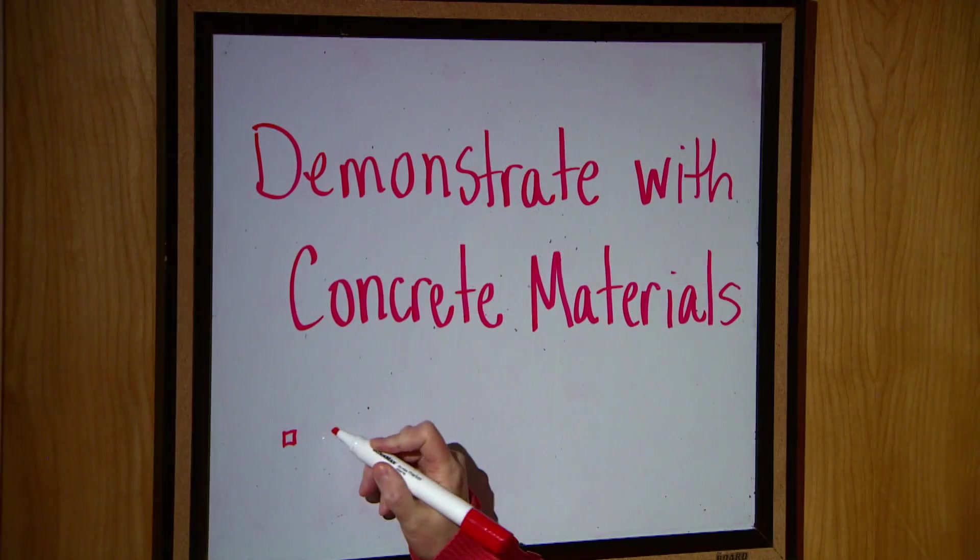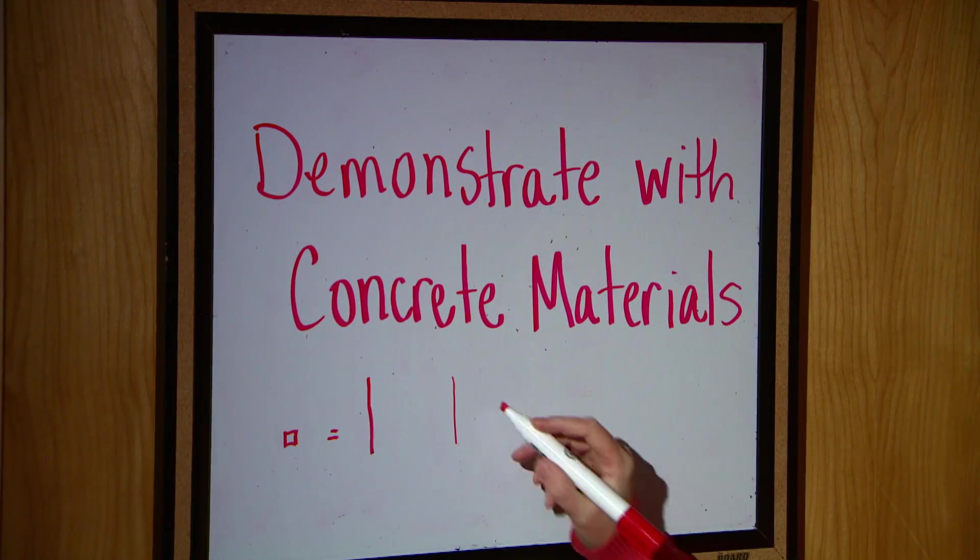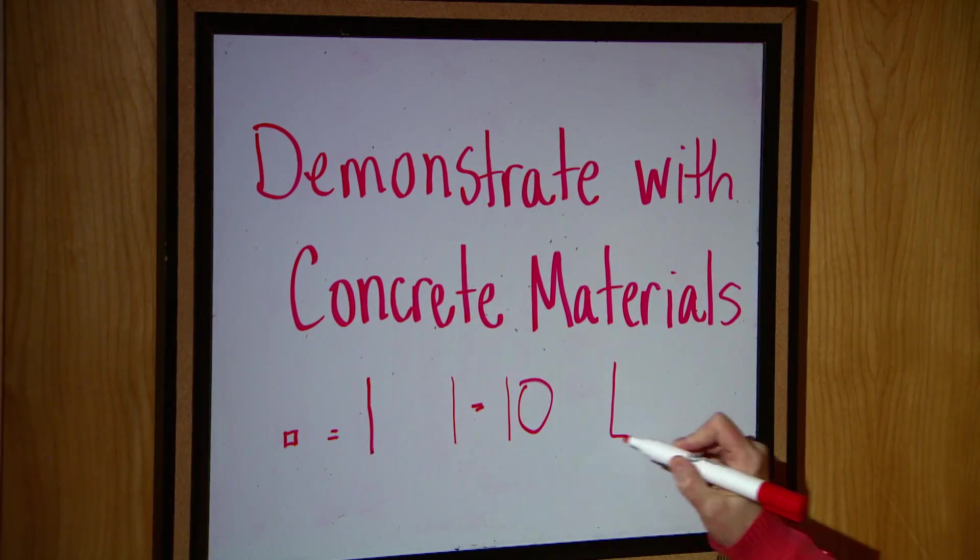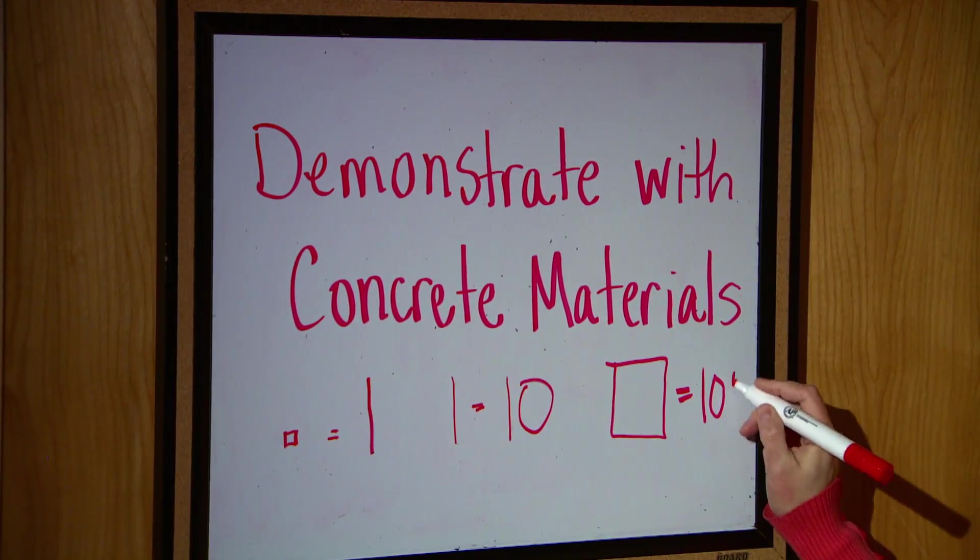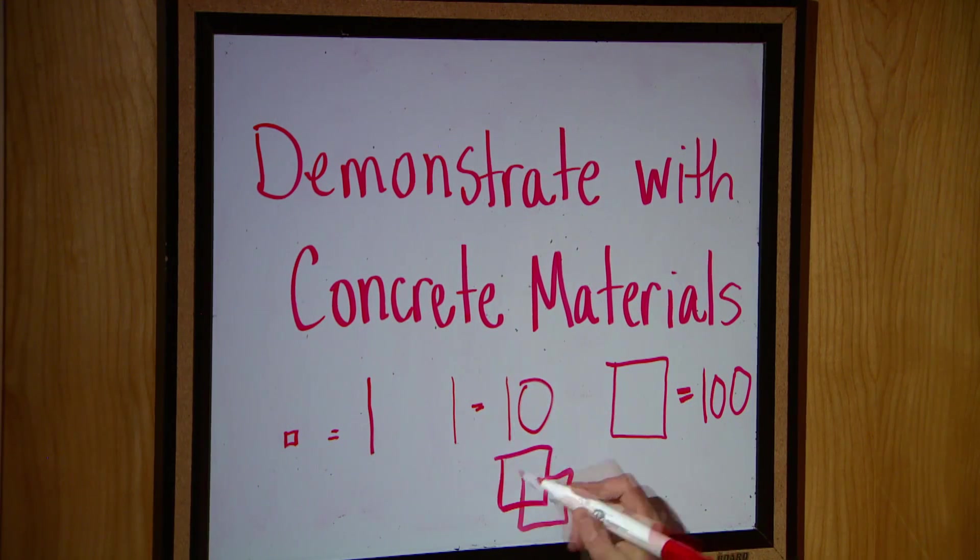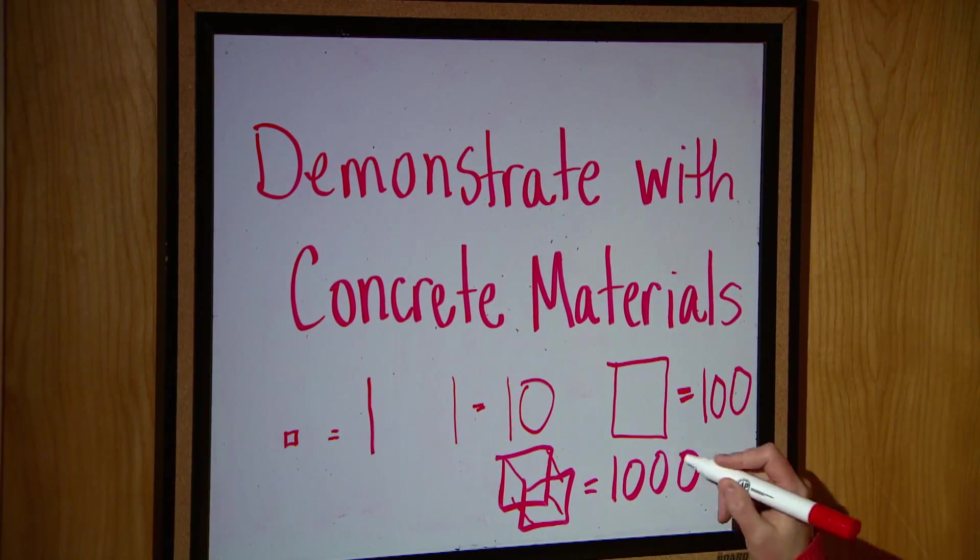We have a unit which is equal to 1, a rod which is equal to 10, a flat is equal to 100, and we have a cube that would equal 1000.